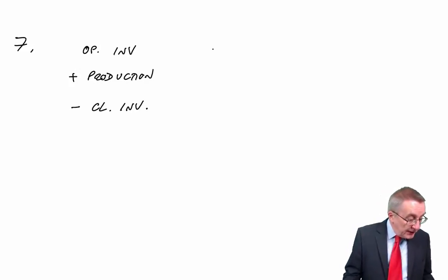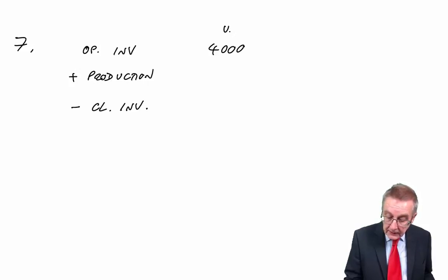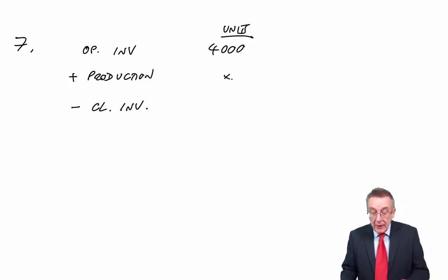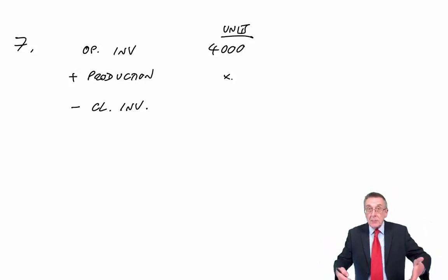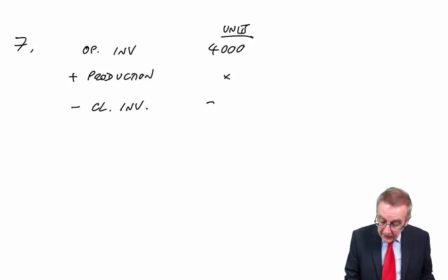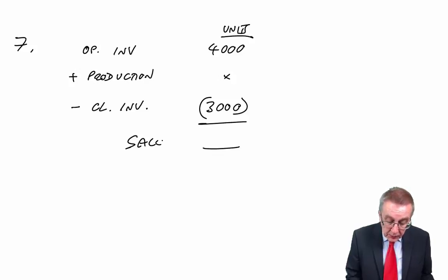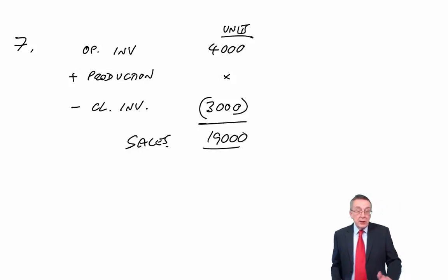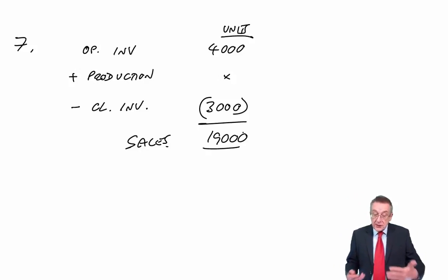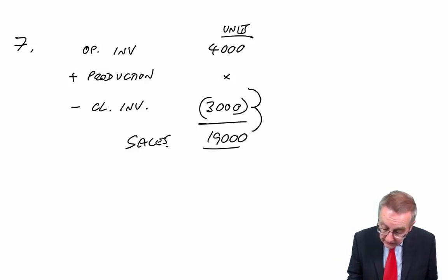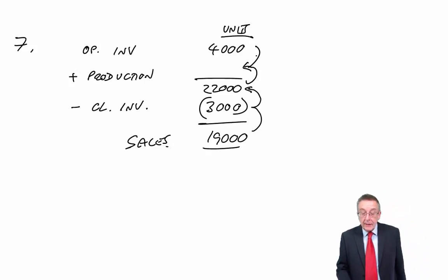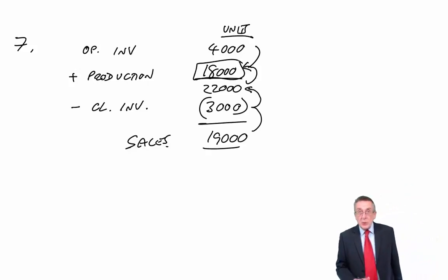It's very much working backwards here. We started with opening inventory of 4,000 units. We produce more and that tells us how many were available for sale, but there was closing inventory of 3,000, and we sold 19,000. If we sold 19,000 and there was still 3,000 left, working backwards we must have had 22,000 available to sell. We'd already got 4,000 at the beginning, so we must have made another 18,000 units.